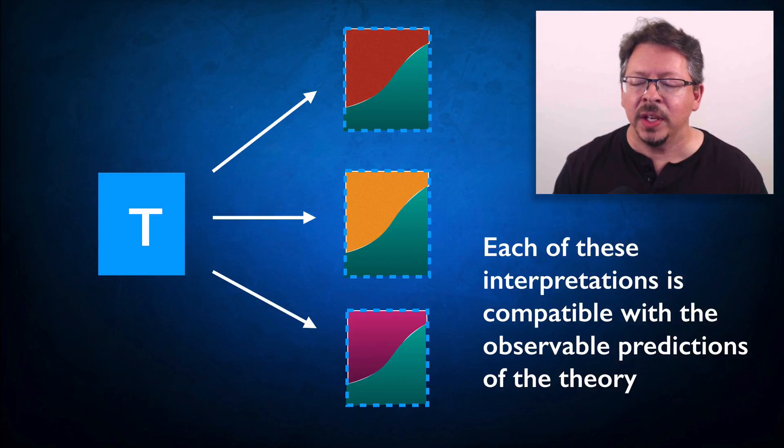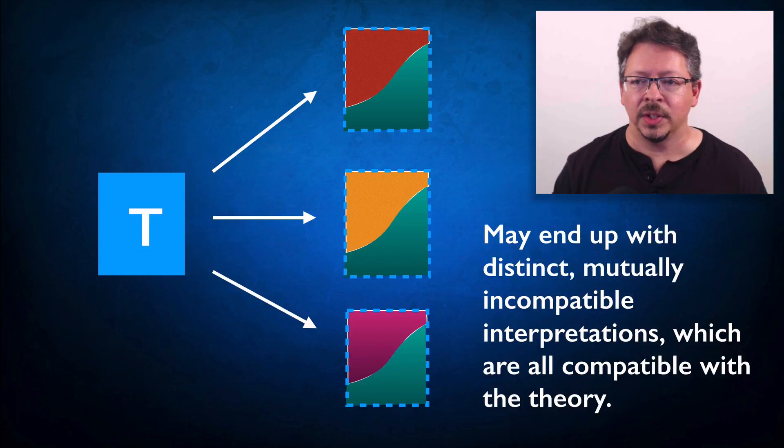And each of these interpretations will generate the same observable predictions because they share those parts in common, the parts that are the basis for the way we use the theory in our reasoning about the world. So we can find ourselves in a situation where a theory is open to multiple interpretations that are distinct but potentially incompatible in the sense that they can't all be true at once. They literally contradict each other.